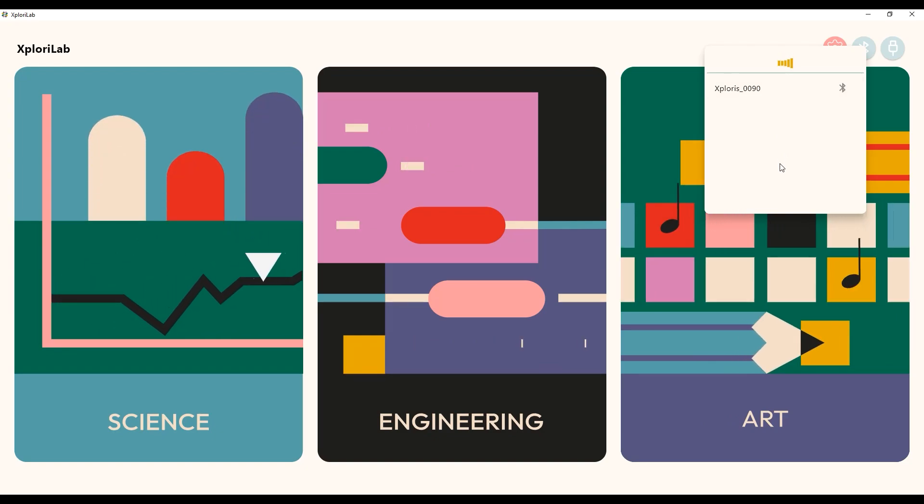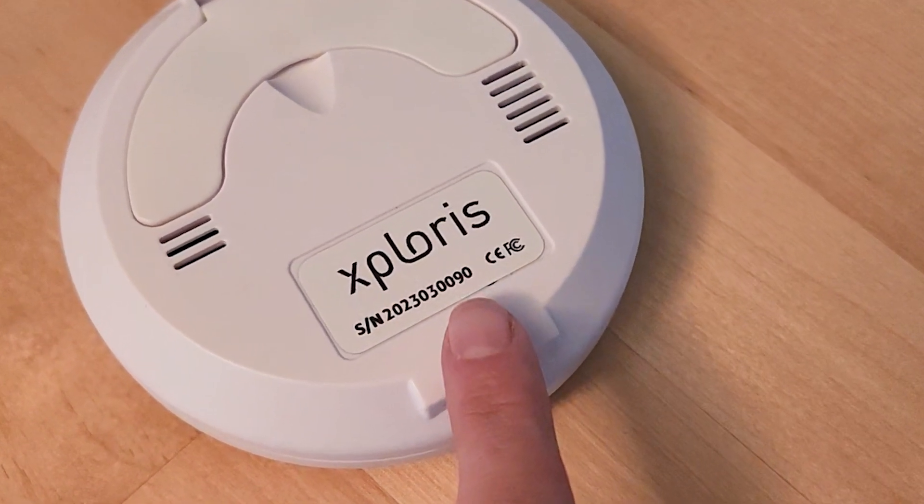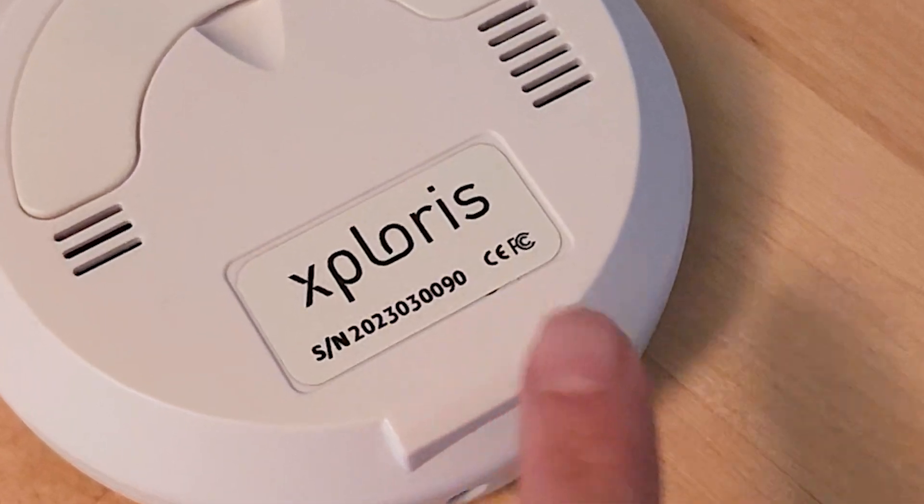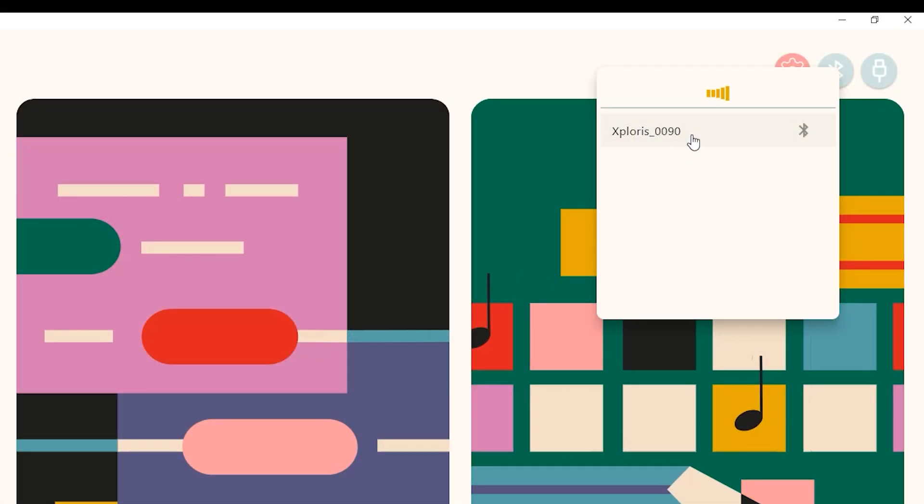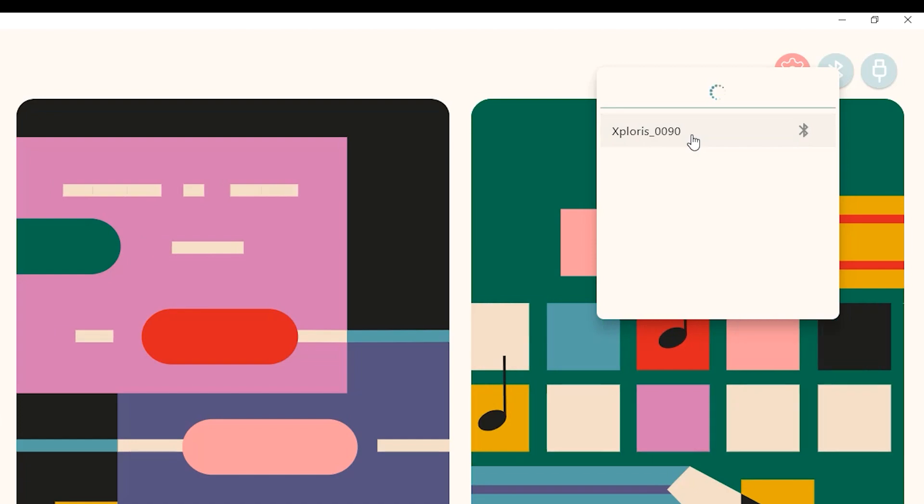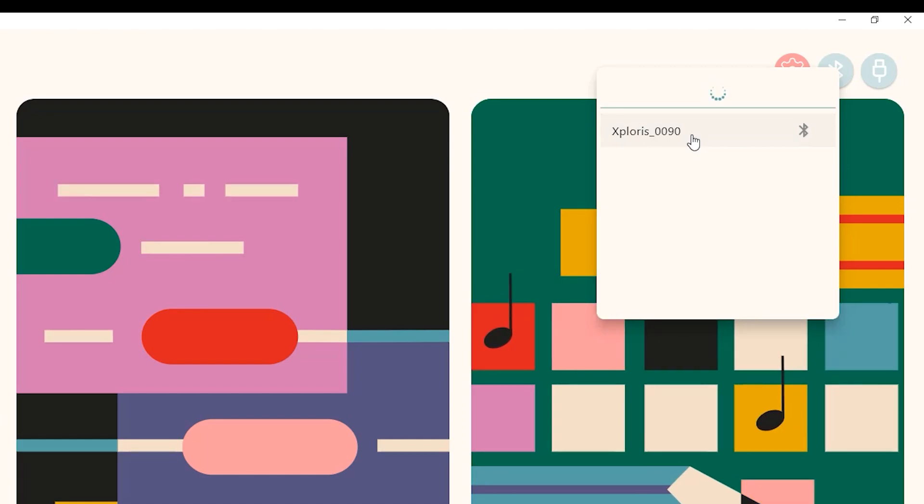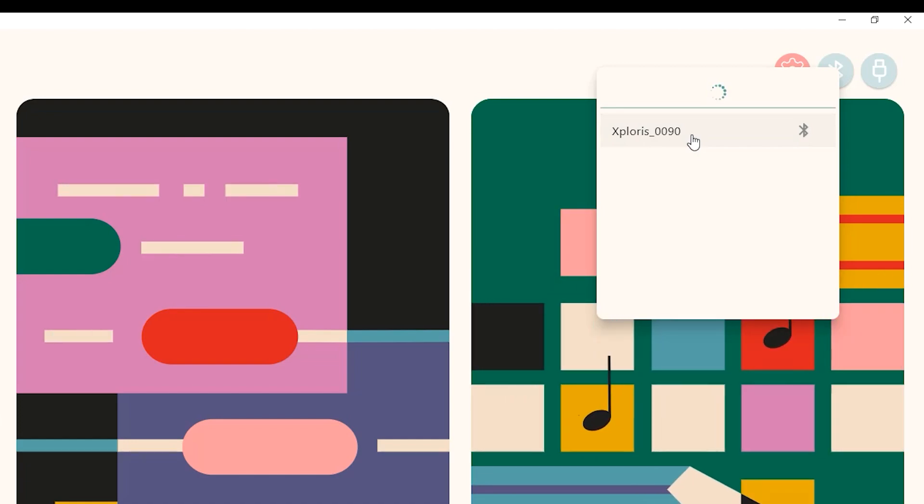Check for the serial number on the back of your device. The last four numbers on the sticker will correspond to how it shows up in the software. Simply click on it, and it will wirelessly connect to your device.